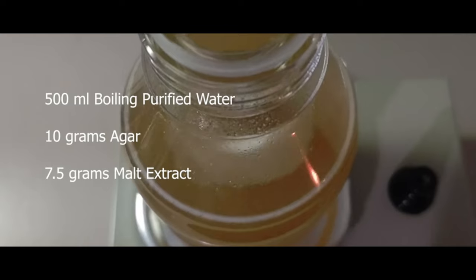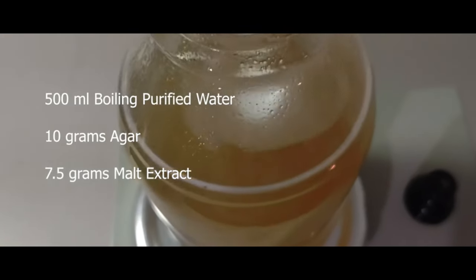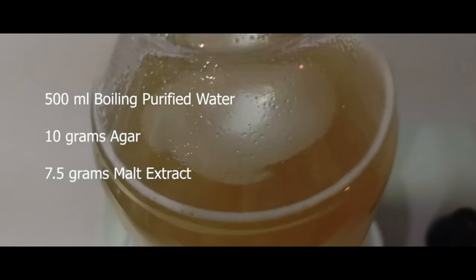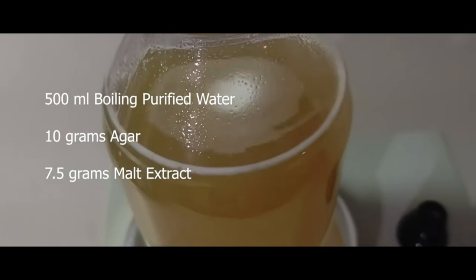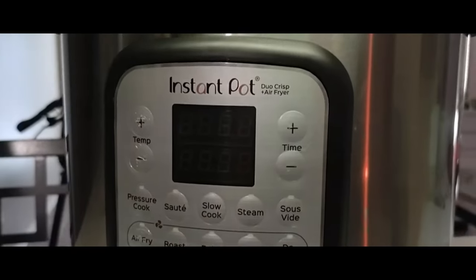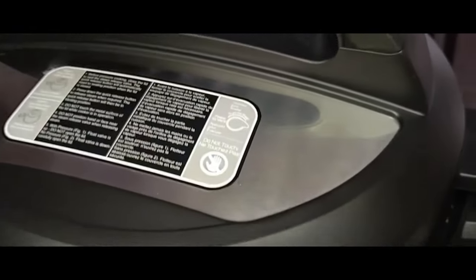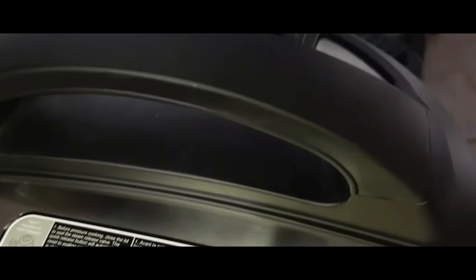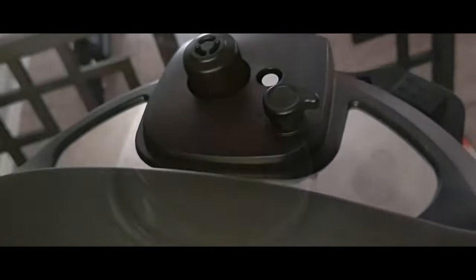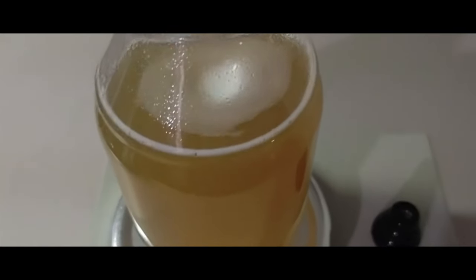Using 500 milliliters of boiling purified or distilled water, mix 10 grams of agar and 7.5 grams of malt extract. Pressure cook for no longer than 20 minutes at 15 psi so you don't caramelize the sugars or overcook the nutrients. Allow the MEA to cool between 120 and 140 degrees then you're ready to pour.